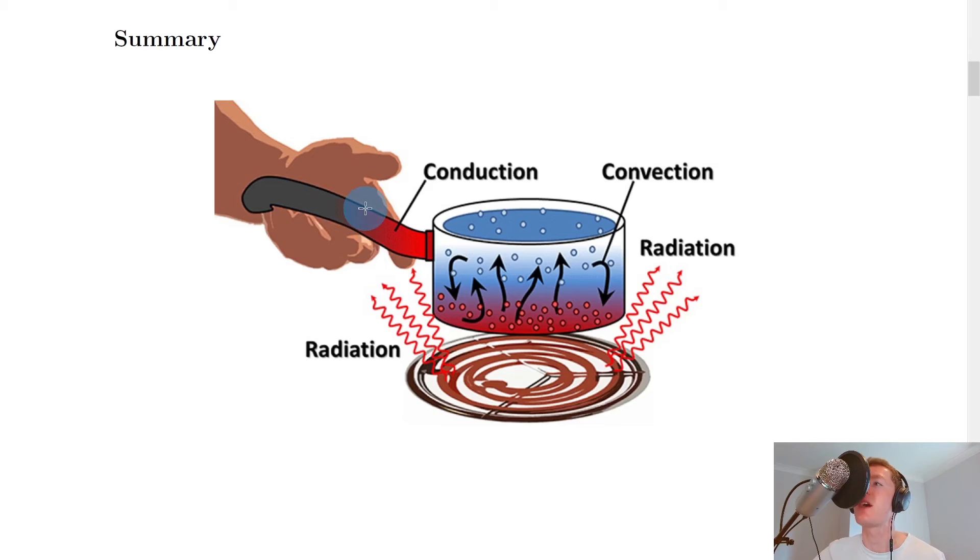This is why the majority of pot handles are not metal, because if that was the case the heat would travel along very well and you would burn your hand every time you tried to pick up the pot with the handle. So usually the handles will be plastic, as that's a good insulator. So we've got conduction there.